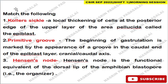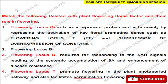The next question is about chick gastrulation. Koller's sickle is a local thickening of cells at the posterior edge of the area pellucida (epiblast). The primitive groove marks the beginning of gastrulation and appears at the caudal end of the epiblast layer, establishing the cranial-caudal axis. Hensen's node is the functional equivalent of the dorsal lip of the amphibian blastopore and acts as an organizer.